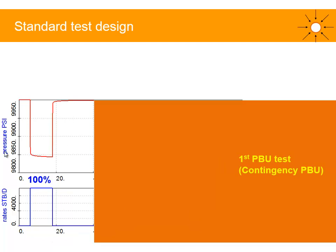Then we have the first pressure buildup (PBU), which is the contingency PBU. If there is any operational issue and we cannot flow the well again at this point, we will have some dynamic flow data from the cleanup and this first PBU. So in the design, we need to make sure we have enough information from this first PBU in case we cannot continue the test.